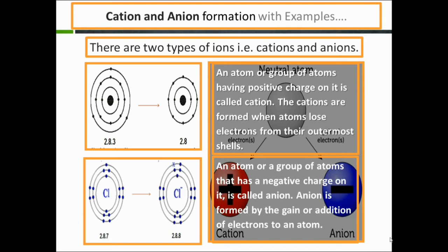Second example: chlorine. First shell having two electrons, second shell having eight electrons, third shell having seven electrons. The last shell must have eight electrons, but it has seven, so it will gain one electron and complete its valence shell by obeying the octet rule. An atom or group of atoms that has a negative charge on it is called an anion. An anion is formed by the gain or addition of electrons to an atom.